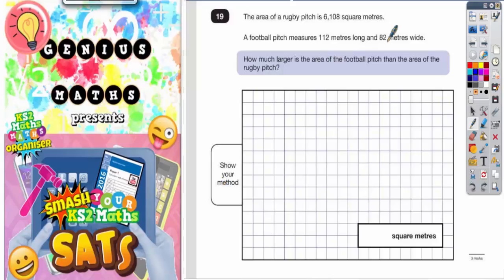Question 19: The area of a rugby pitch is 6,108 square meters. A football pitch measures 112 meters long and 82 meters wide. How much larger is the area of the football pitch than the area of the rugby pitch?